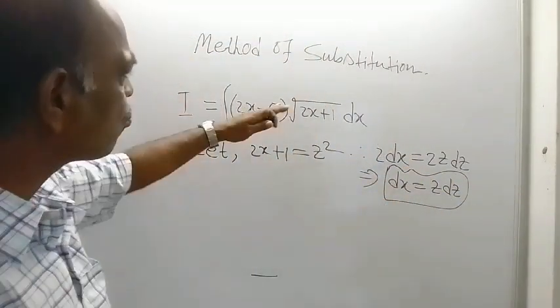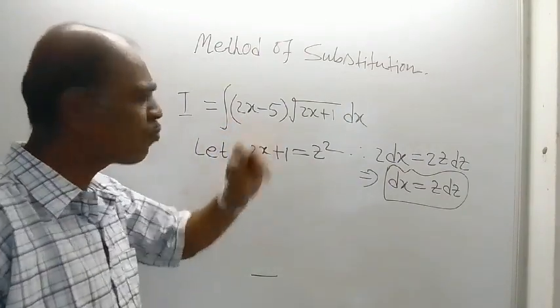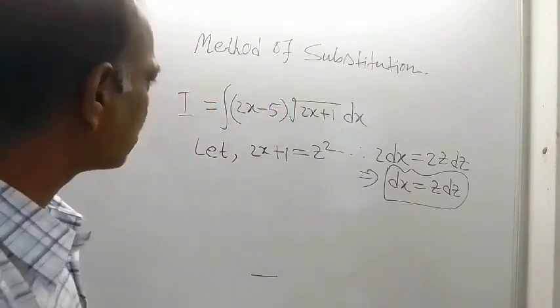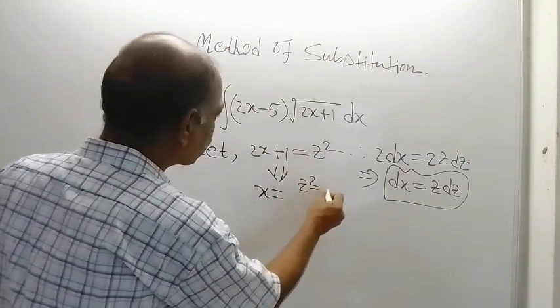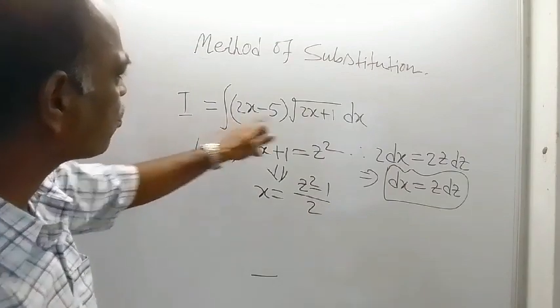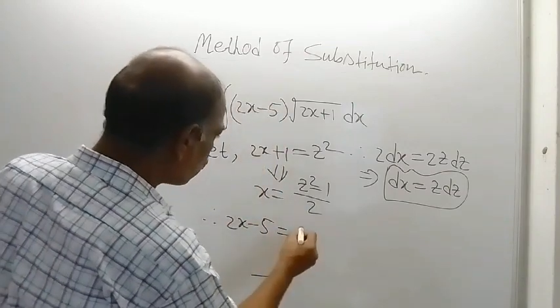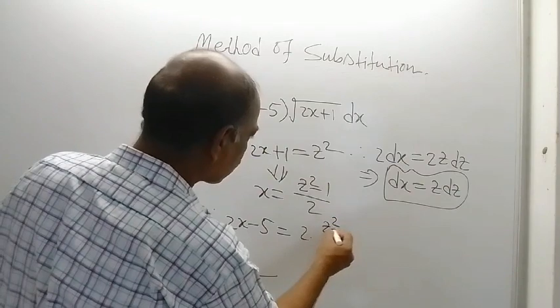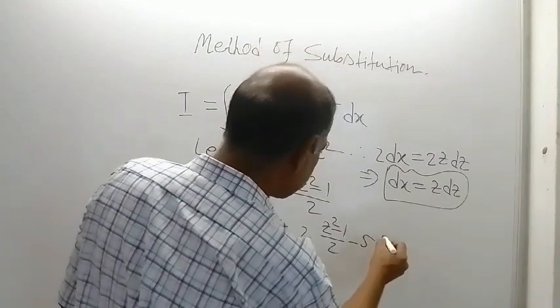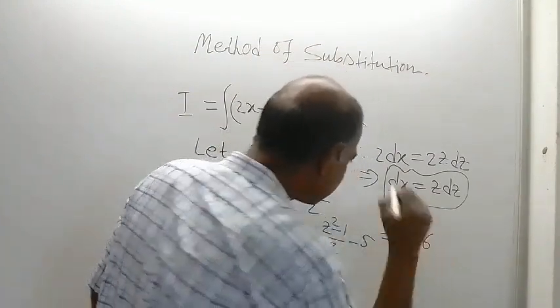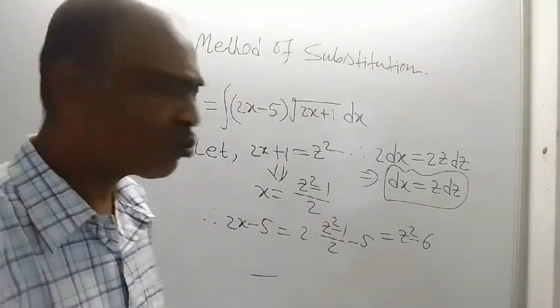Now this can be used to solve the given problem. But before that, there is the expression 2x-5, so you have to write this in terms of z. From the substitution, x equals (z²-1)/2. Therefore, 2x-5 equals 2 times (z²-1)/2 minus 5. These twos cancel, giving z²-1-5, which makes z²-6.